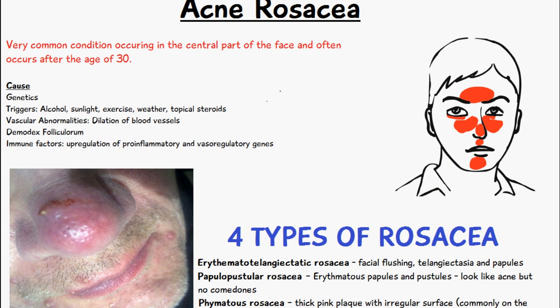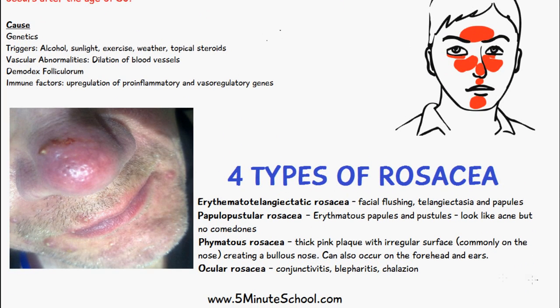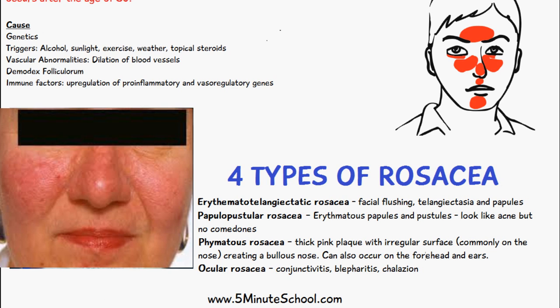There are four types of rosacea. The first is erythematotelangiectatic rosacea, which involves facial flushing, telangiectasia, and papules. The face is usually quite red, small blood vessels become visible on the face, and there are papules — small spots.